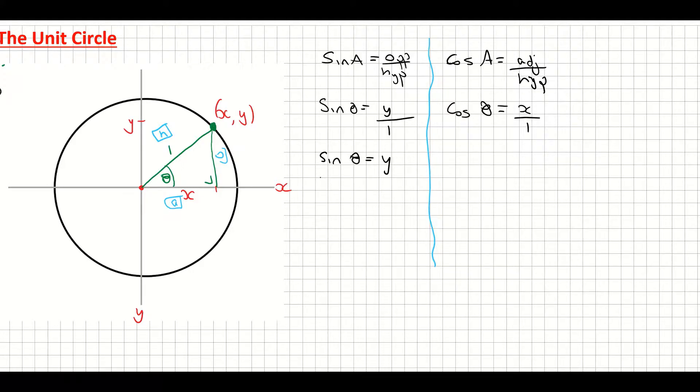And once again, x divided by 1 must give me x. So what that's telling me is that x is equal to cos theta. So let's just have a look at that for a second. So what does that basically tell us?